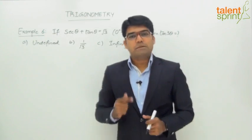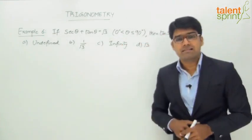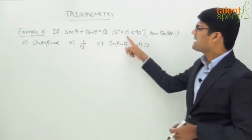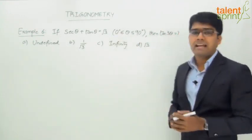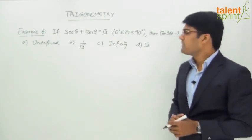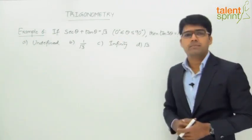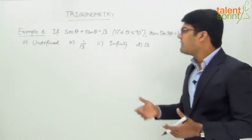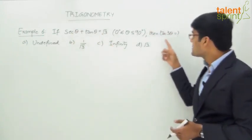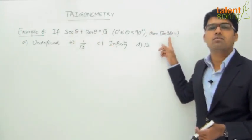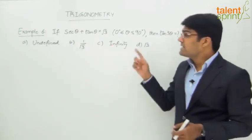Let us look at example number 6. It says: if secant θ plus tan θ equals √3, where θ lies between 0° and 90°, then tan 3θ equals what? The four answer options are: undefined, 1/√3, infinity, and √3. We have to solve this equation, find the value of θ, and then substitute it to find tan 3θ.